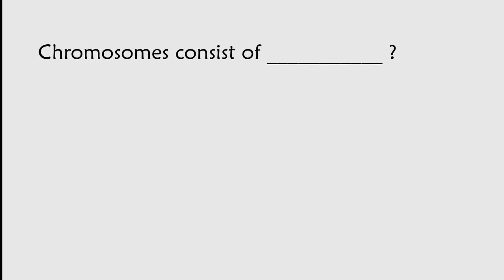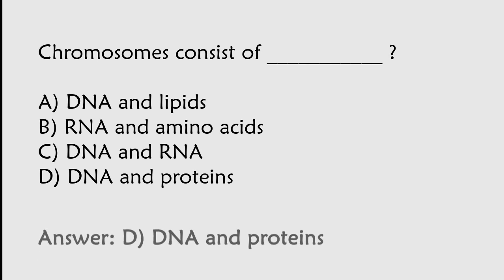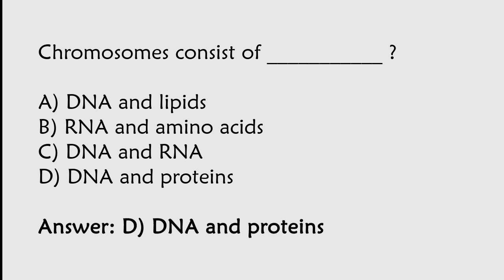Chromosomes consist of: DNA and lipids, RNA and amino acids, DNA and RNA, DNA and proteins. The correct answer is Option D. Chromosomes consist of DNA and proteins.